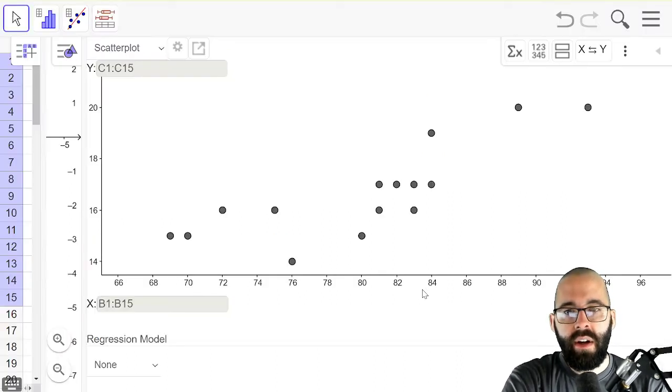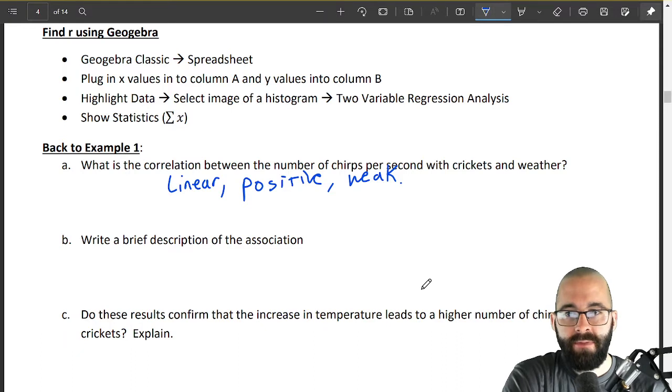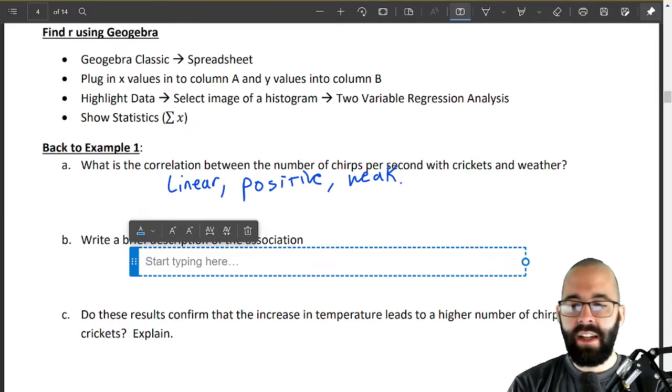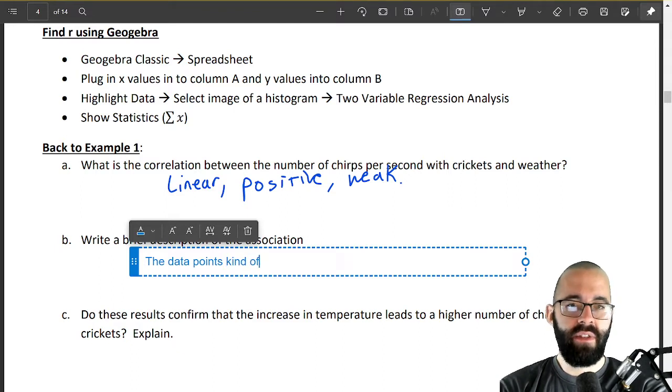Are there any outliers? Maybe but the correlation is so weak it's kind of harder to visually look at outliers and there's no groupings here. It should look like our scatter plot from before. Write a brief description of the association, kind of just wants us to interpret the answer from part a. It's linear so the data points kind of follow a line, that's how to explain that one.